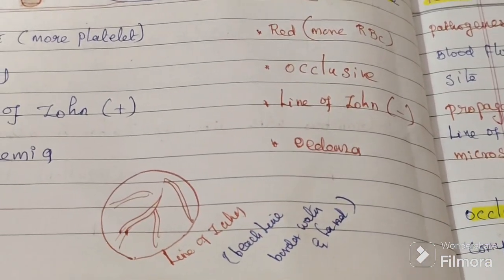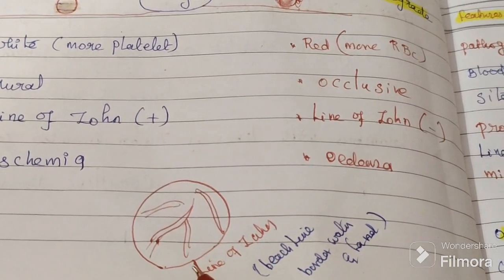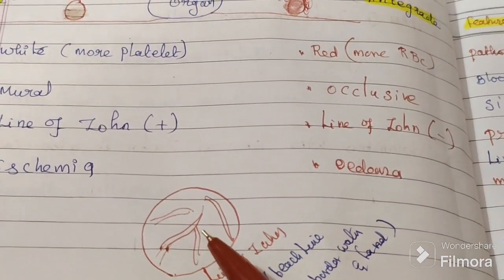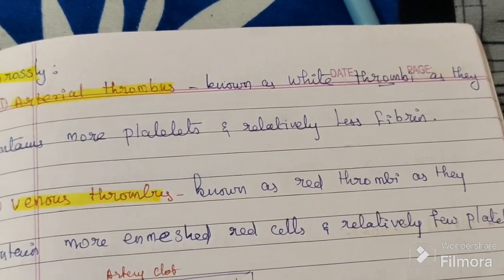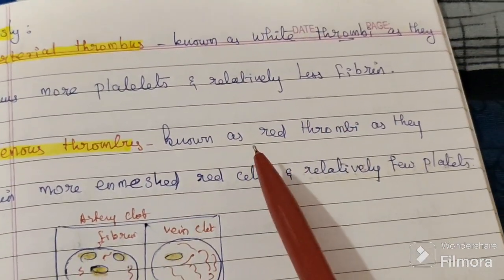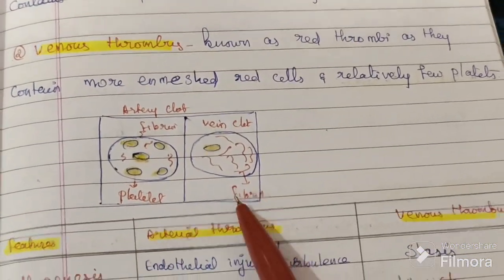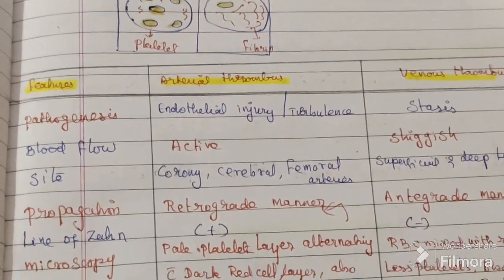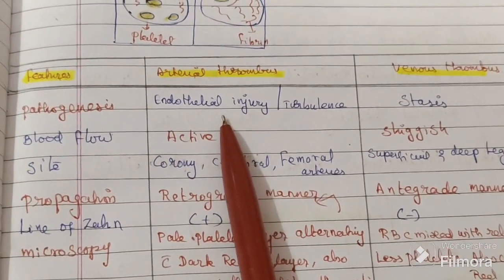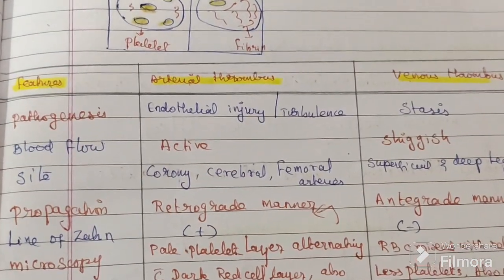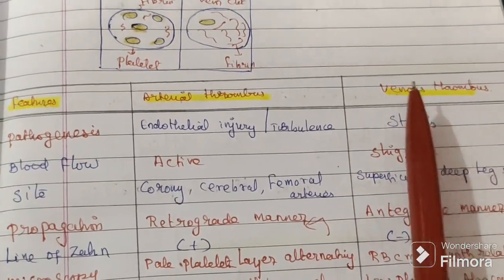Venous thrombus, being fully occlusive, causes edema. The lines of Zahn, with alternating platelets and RBCs, look like a beach line — the border between water and land — as shown in the attached diagram. Grossly, the white thrombus has more platelets and less fibrin, while the red thrombus has RBCs and only a few platelets. The main difference in pathogenesis: arterial thrombus is caused by endothelial injury.